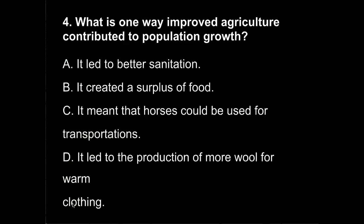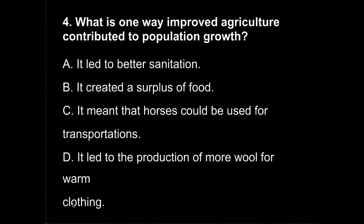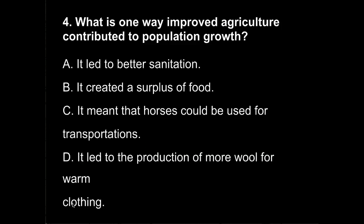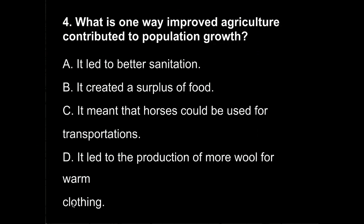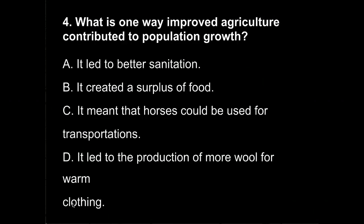Question 4. What is one way improved agriculture contributed to population growth? Is it A, it led to better sanitation? B, it created a surplus of food? C, it meant that horses could be used for transportation? Or D, it led to the production of more wool for warm clothing?